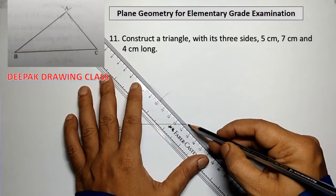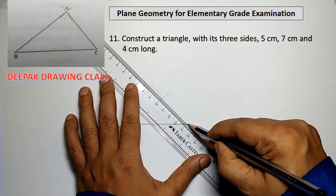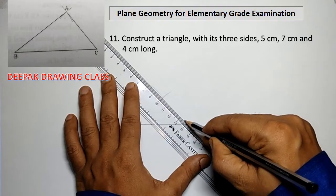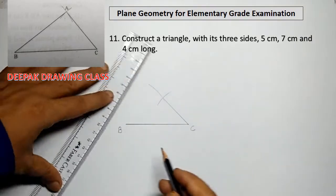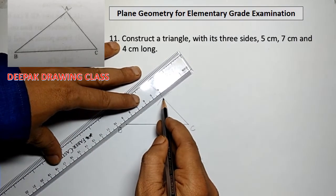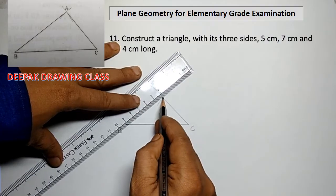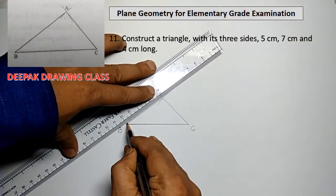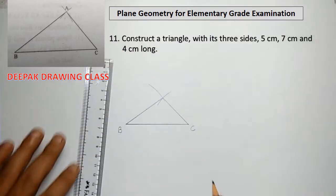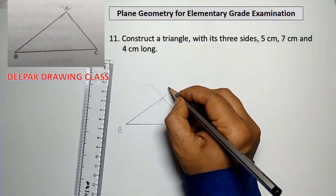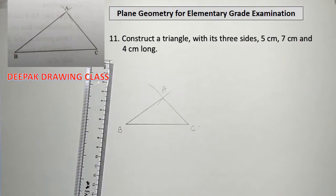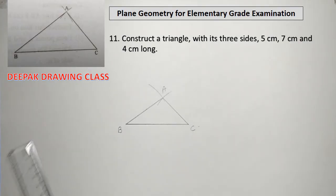Lastly draw lines AB and AC respectively. For reference do see the given diagram. And the construction is done. Thank you.